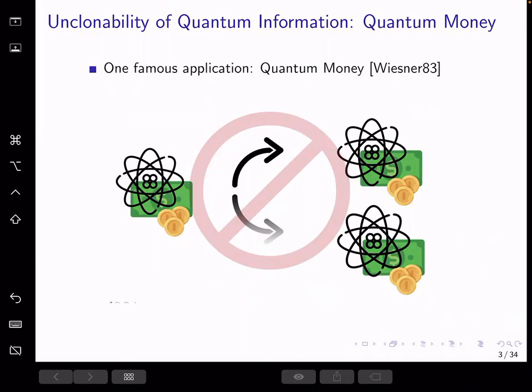One famous example is quantum money. A quantum money state encodes a money value and a serial number. A valid money state can get verified by the bank, but the user with one copy of money state cannot produce two copies that both pass verifications.